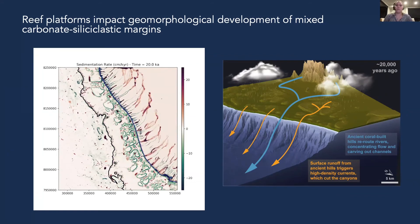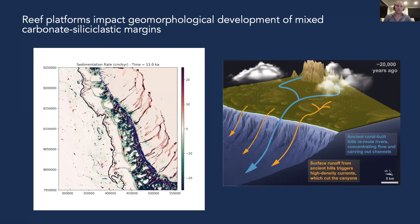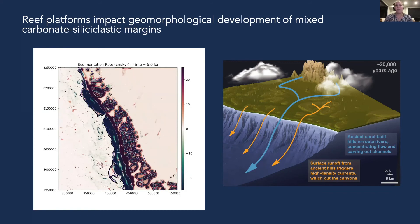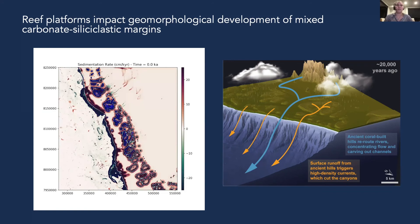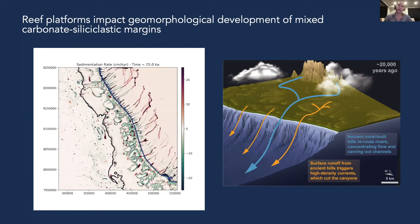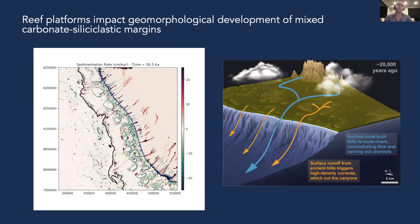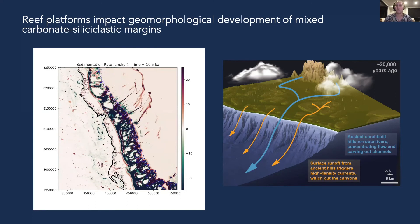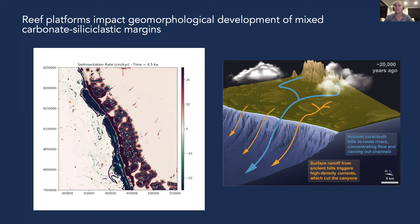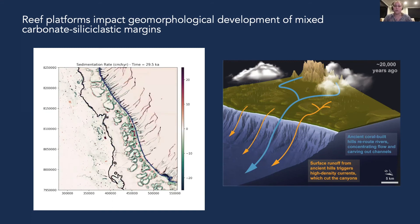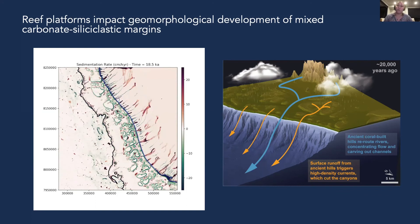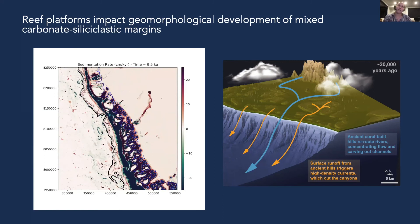We were able to reproduce a lot of geomorphological and sedimentary features on this margin for the first time, which meant we could start to propose new mechanisms for the formation of many features that we were previously unable to provide a solid explanation for. We found that at lowstand, reef platforms reroute rivers on the shelf and cause them to carve out submarine channels.